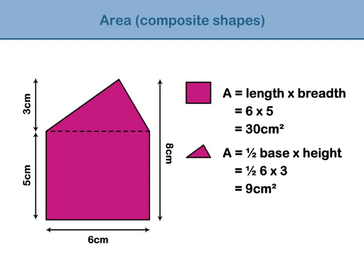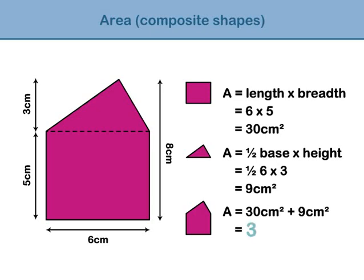The area of the rectangle is 30 centimetres squared, and the area of the triangle is 9 centimetres squared. To get the area of the composite shape, add the areas of the two separate shapes together. The area of the composite shape is 30 plus 9, which equals 39 centimetres squared.